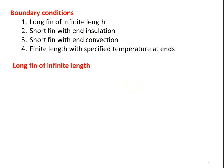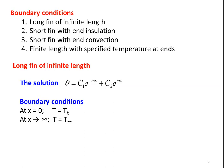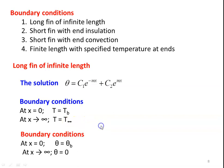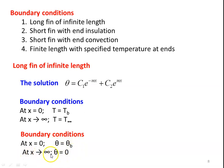First we take the long fin of infinite length. The solution is θ = C1·e^(-mx) + C2·e^(mx). For a very long fin: at x = 0, T = Tb (base temperature), and as x tends to infinity, T tends to T∞. In terms of θ: at x = 0, θ = θb; and as x tends to infinity, θ = 0, because T∞ - T∞ = 0. These are the two boundary conditions — at the base and at the tip of the fin.